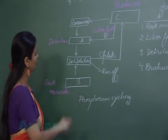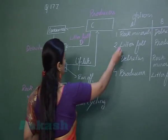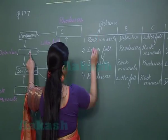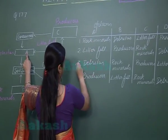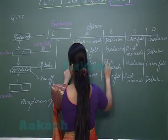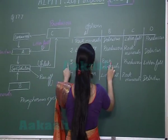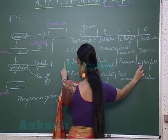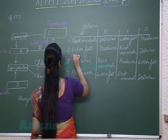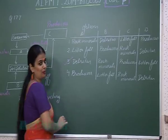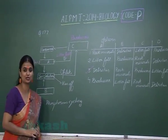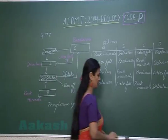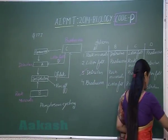So looking for the right option: A represents detritus, B represents rock minerals, C represents producers, and D represents litter fall. For question number 177, the right option is option number 3.